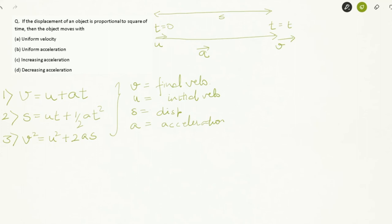Now, what is the objective of the question? It is asking us: displacement of an object is proportional to square of time. You can clearly see that in equation number 2.